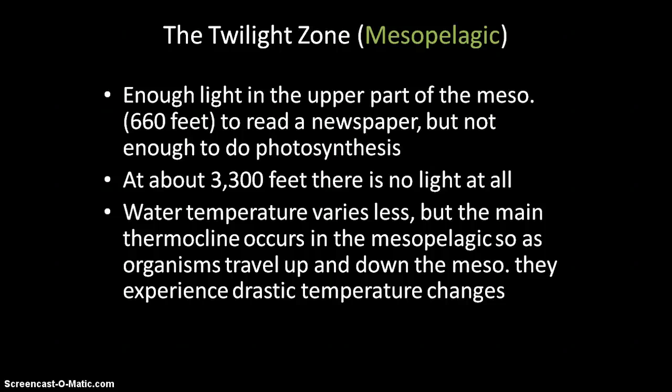The twilight zone, or the mesopelagic, runs from 200 meters down to 1,000 meters. At the top of the twilight zone, there's enough light to probably read a newspaper, but not enough for photosynthesis — so it is part of the aphotic zone. After 3,300 feet, you enter the deep sea with no light whatsoever. In the mesopelagic zone, we also get the major thermocline of the ocean — a rapid change in temperature with depth. So if you're a fish that lives in the mesopelagic and moves up and down, you have to deal with a big change in temperature.